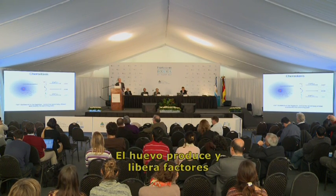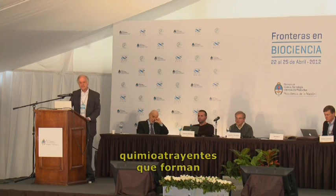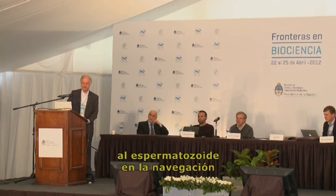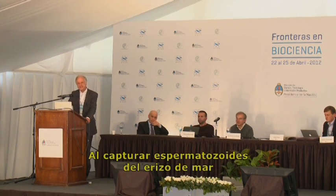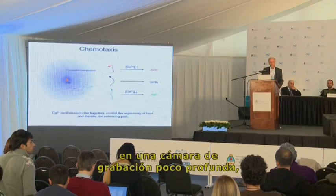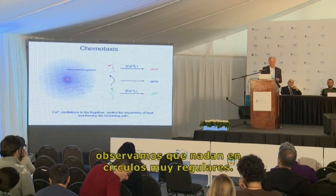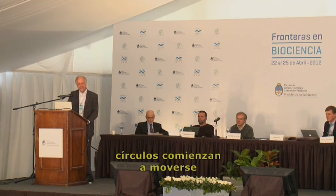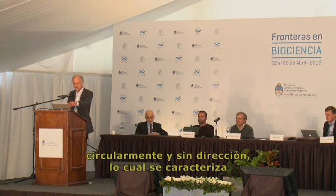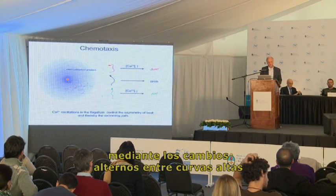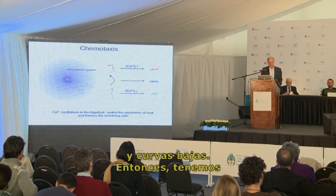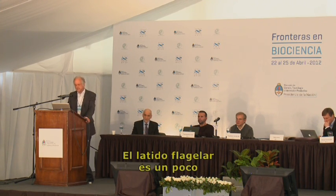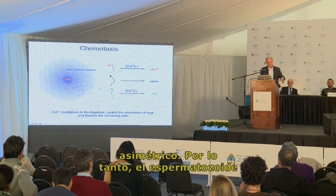The egg produces and releases chemical factors called chemotractants, and they form a chemical gradient around the egg. This chemical gradient provides cues for the sperm to navigate and find the source. Sea urchin sperm, when captured in a shallow recording chamber, swim in very regular circles. When you apply a chemical gradient, these circles drift — they move on drifting circles characterized by alternating turns of high curvature and low curvature. The flagellar beat is slightly asymmetric at rest, and therefore the sperm swim in circles.